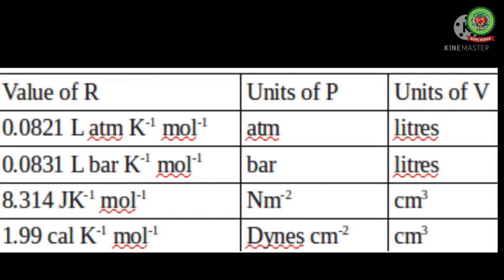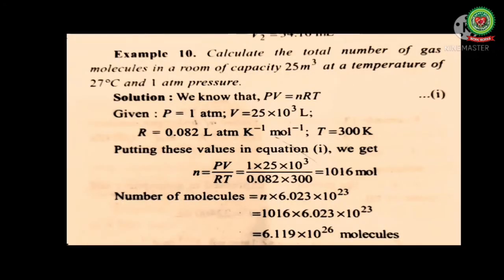Example problem: Calculate the total number of gas molecules in a room of capacity 25 cubic meters at a temperature of 27 degrees Celsius and one ATM pressure. In this numerical we are given value of P which is one ATM, V is 25 times 10 raised to power 3 liters. Depending on the value of P and V, we have taken R equals 0.082 liter atmosphere per Kelvin per mole. Temperature is given as 27 degrees Celsius, so converting it into Kelvin scale it will be 300 Kelvin.